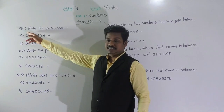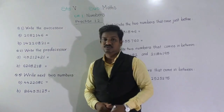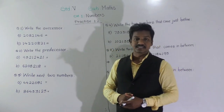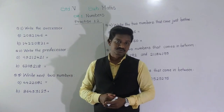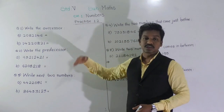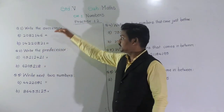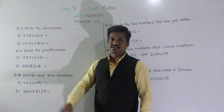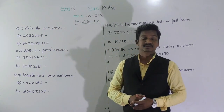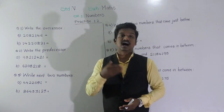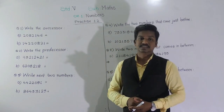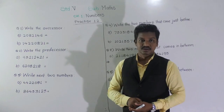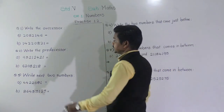The first question is: write the successor of the following numbers. In the previous lecture, we learnt about successor and predecessor as well as about skip counting. This practice is totally based on those three concepts. In the first question, we have to find the successor of the given number. You know that successor means the number which comes just after the given number — that is, the number obtained by adding 1 to the given number.